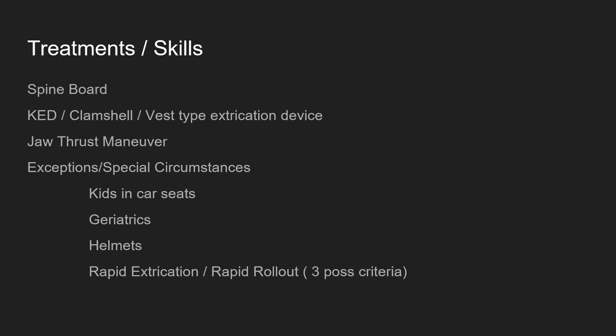Looking at Chapter 32, the common treatments and skills we will learn include the spine board, using a vest-type extrication device — whether you call it a clamshell or a KED, basically the same thing. We need to know how to perform the jaw thrust maneuver on any patients that we have spinal motion restriction on. There are also some special circumstances to cover, such as kids in car seats, and particularly in this chapter, helmets.